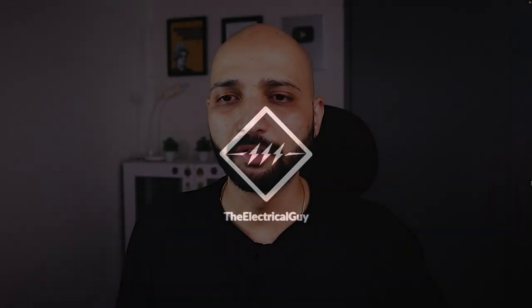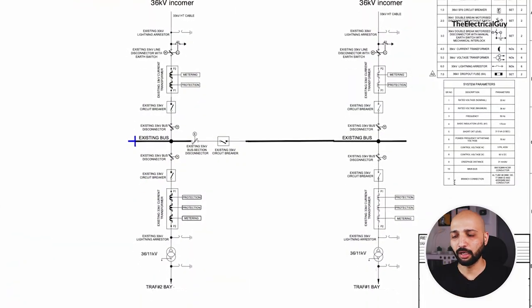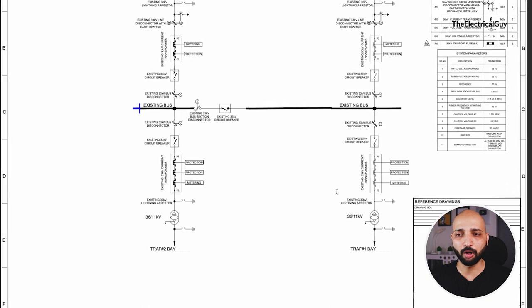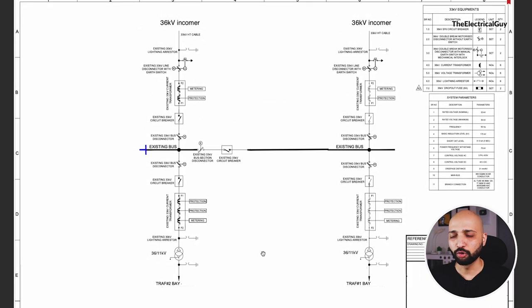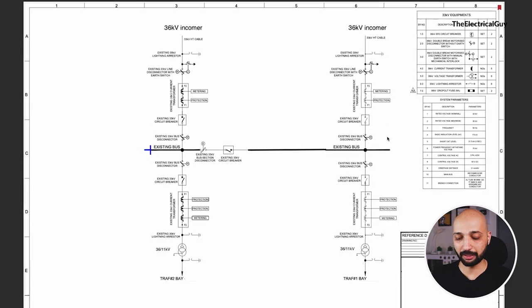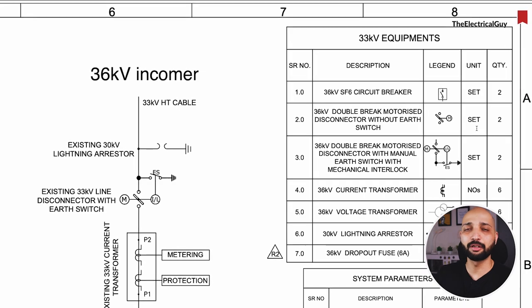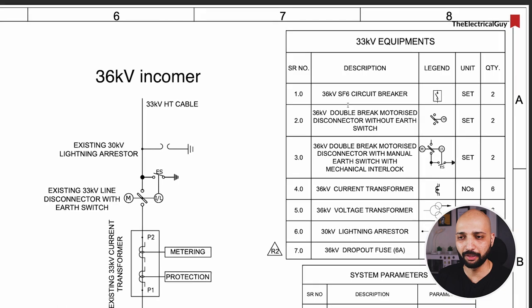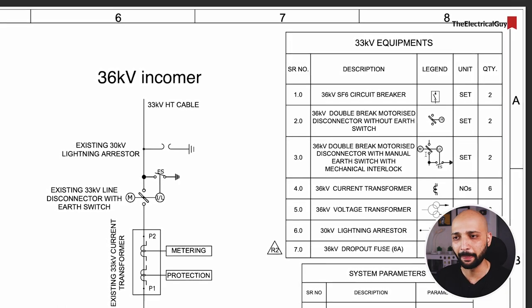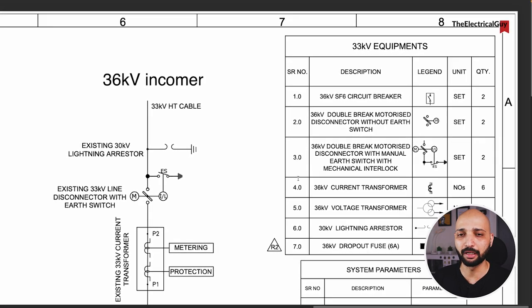The first thing that we need to do is identify the structure of the diagram. Here we can see on the right hand side we have some information, at the bottom right hand corner we have the title block, and at the center we have the single line diagram. Let us first go to the right hand side. The first table we can see is the equipment list, which shows the description of each equipment, the symbol, and the quantity required.